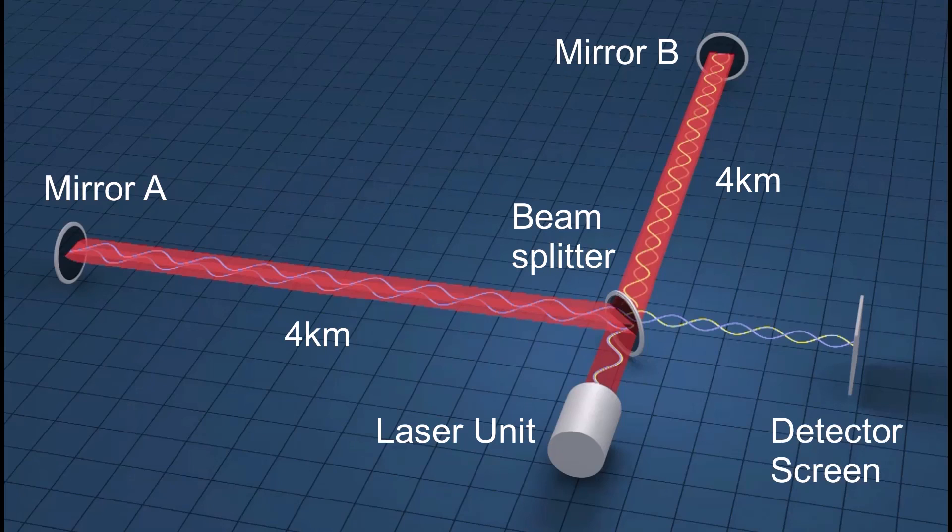Any slight change in the length between path A and path B would result in a change of the laser wave interference pattern that can be detected.